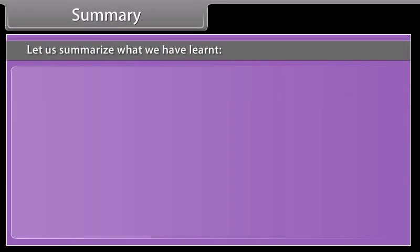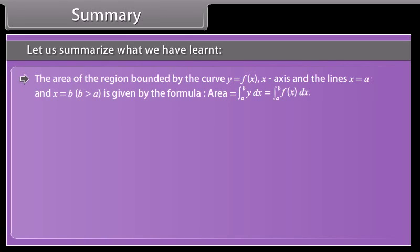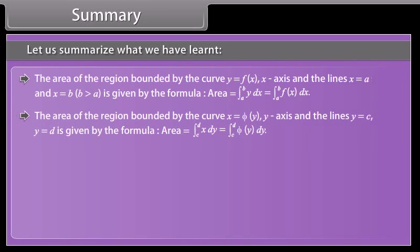Let us summarize what we have learned. The area of the region bounded by the curve y = f(x), the x-axis, and the lines x = A and x = B, where B > A, is given by: area = ∫ from A to B of y dx = ∫ from A to B of f(x) dx. The area of the region bounded by the curve x = f(y), the y-axis, and the lines y = C and y = D is given by: area = ∫ from C to D of x dy = ∫ from C to D of f(y) dy.